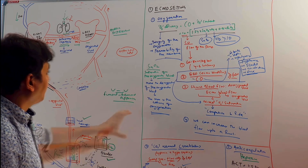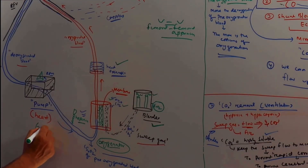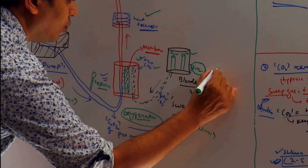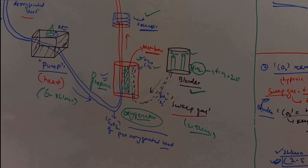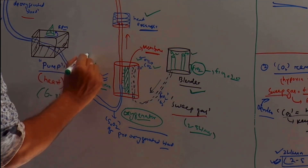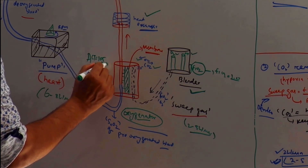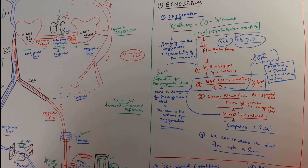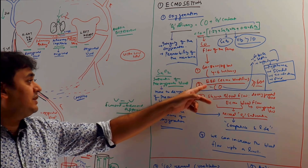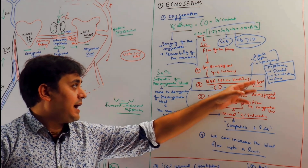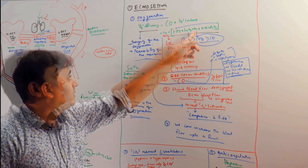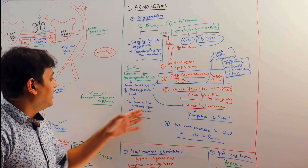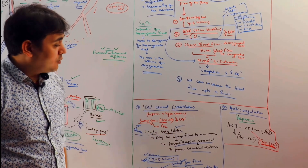These are the primary settings: flow of 6 to 8 liters per minute, sweep gas flow 2 to 5 liters per minute, initial FiO2 of 1.0 then gradually decrease, and heparinize to keep ACT at 105 to 180. Because ECMO blood flow cannot be increased beyond a limit, decrease cardiac output if it starts rising to keep the EBF-to-cardiac output ratio above 60 percent. Keep hemoglobin more than 10, and remember the more deoxygenated the pre-oxygenator blood, the more efficient the oxygenator.